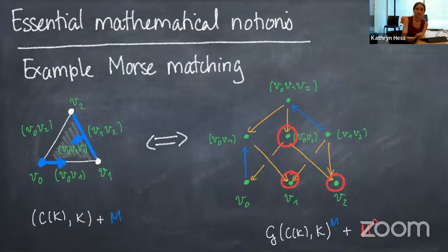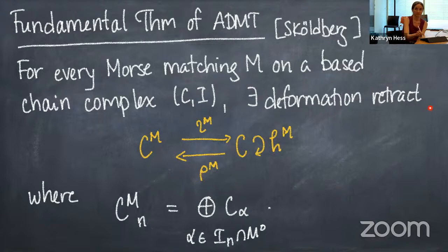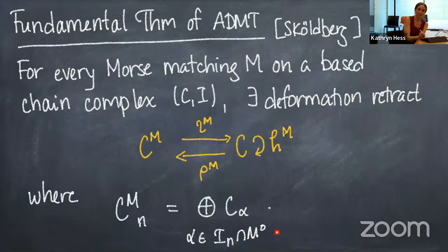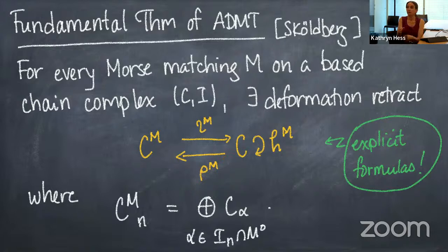The fundamental theorem of algebraic discrete Morse theory, due to Emile Skoeldberg about 10-15 years ago, states that given a Morse matching on a chain complex, there is a deformation retract collapsing the big complex to a much smaller one consisting only of the critical cells. If you choose your Morse matching well, you won't have too many critical cells. Moreover, this is a constructive result — you have very explicit formulas for all these maps, so you can track exactly what they're doing.